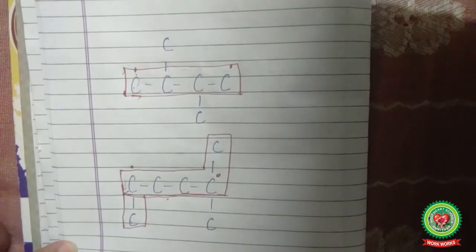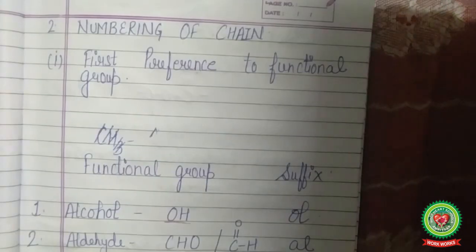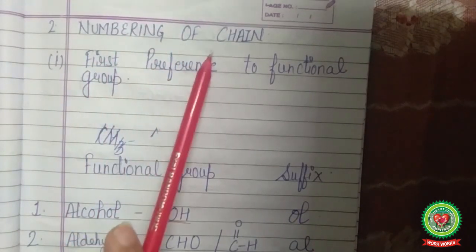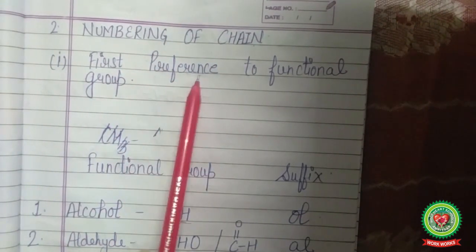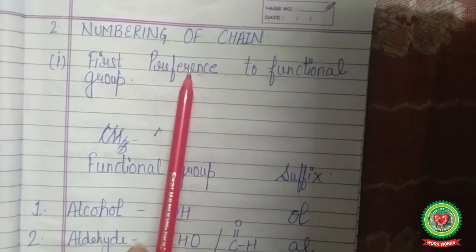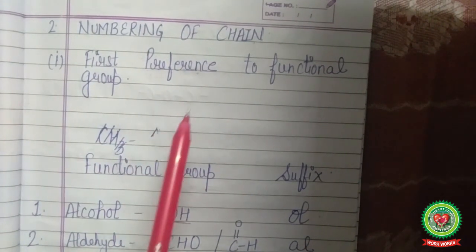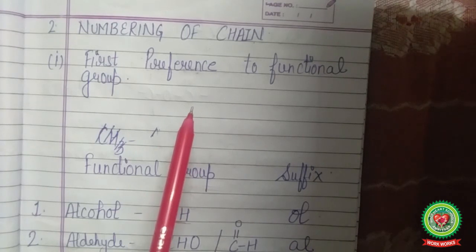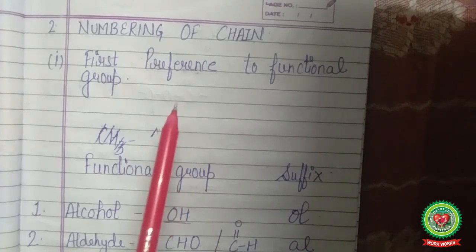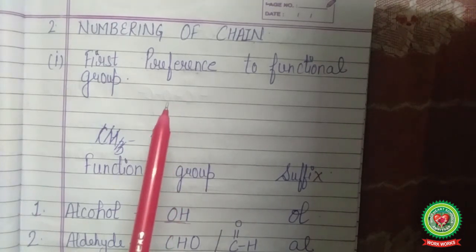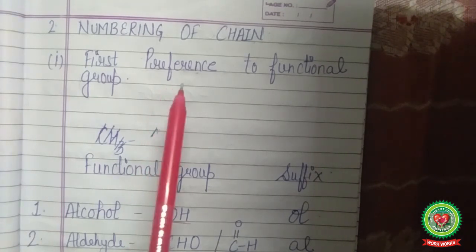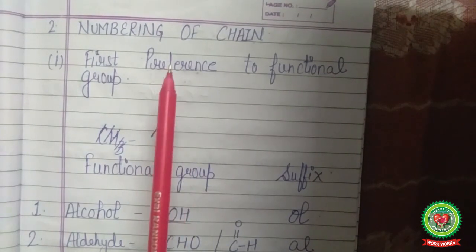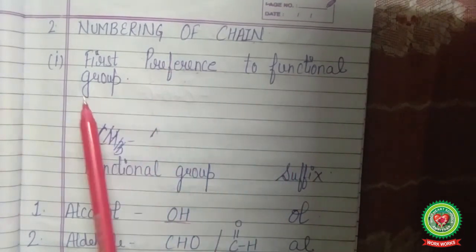After chain selection, the next step is numbering of the chain. We have to find preferences — meaning we determine from which end to start the numbering, i.e., which carbon should be assigned number one. The first preference for numbering is the functional group.